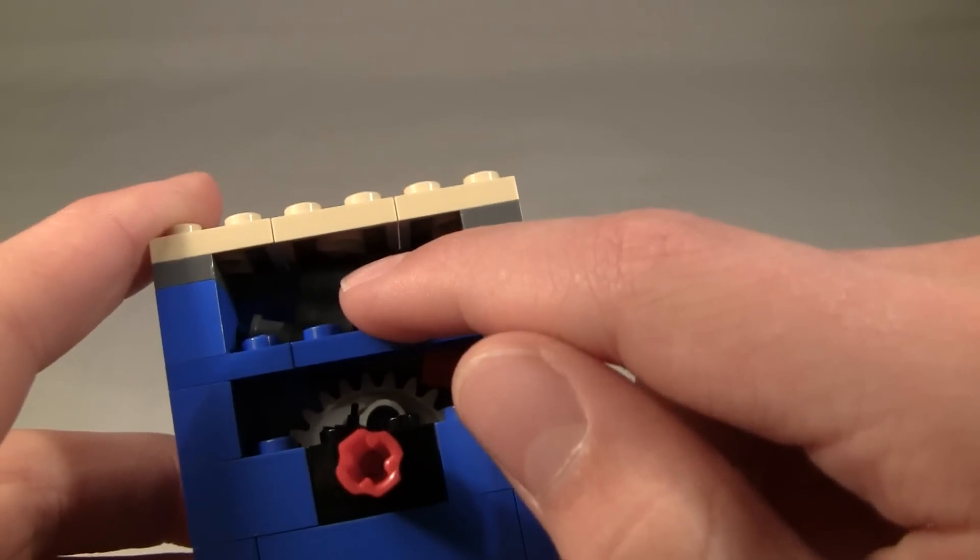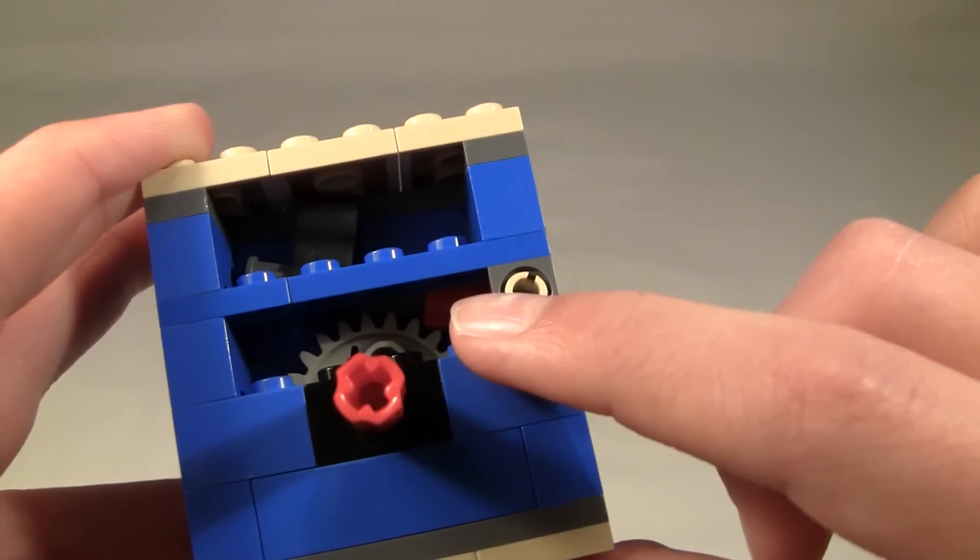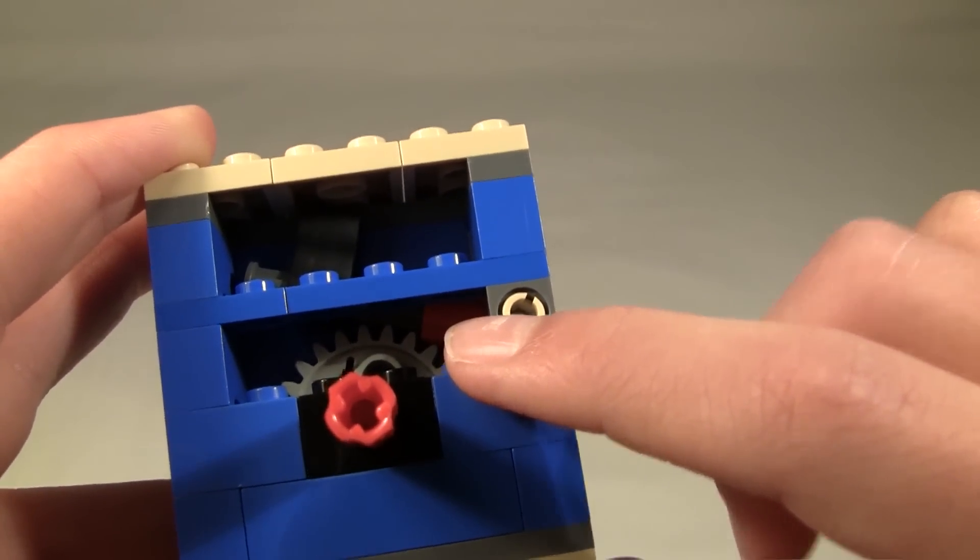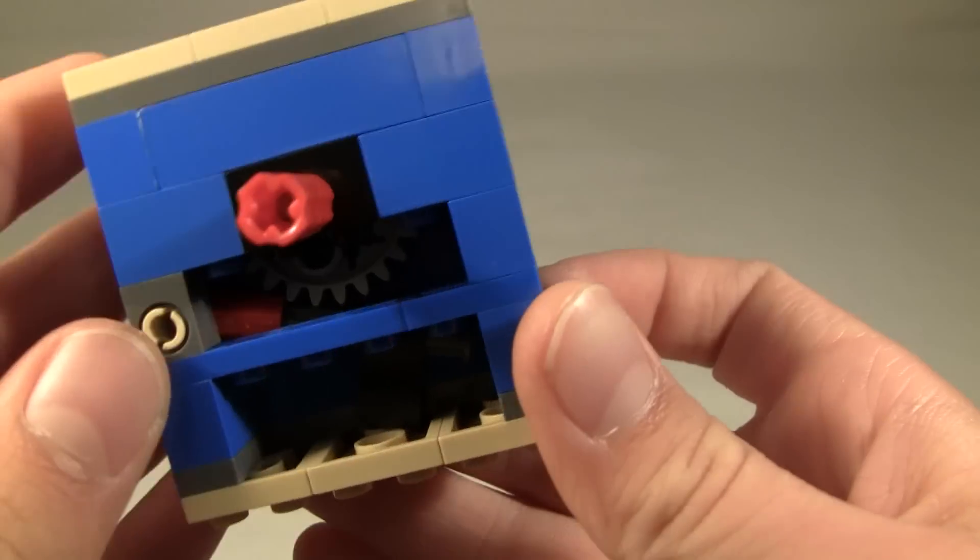Up here is a rubber piece pressing against the roof so that even when this is flipped upside down, the red piece makes contact with the gear like this.